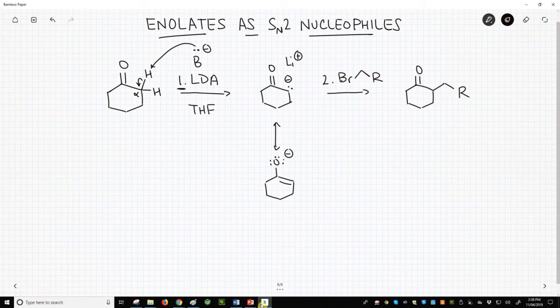which has an O minus. I admit this is the major contributor according to the rules of evaluating resonance forms. Either way, the enolate is an intermediate. Once formed, the second step will occur.